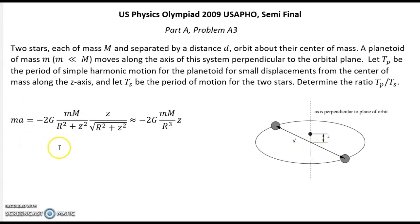So this is the expression for force acting on this planetoid. M A equal negative two because two stars. G small m big M and the distance squared which is r squared plus z squared.